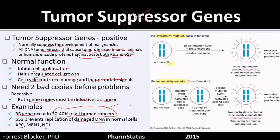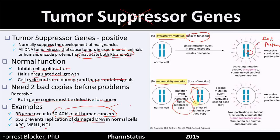We can see here, looking at comparing oncogenes with tumor suppressor genes: overactivity mutation, gain of function, is an oncogene. If we have a single mutational event from a proto-oncogene — because it does something positive, it's a gain of function — even one mutation will cause you to start making bad protein. But for an underactivity mutation, such as a loss of function like a tumor suppressor gene, we still have one good copy if we only have one bad copy. We need two mutations for the tumor suppressor gene to be turned off.